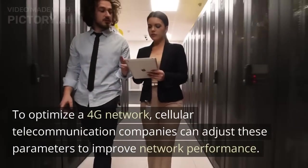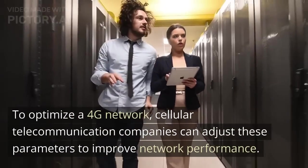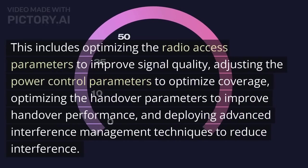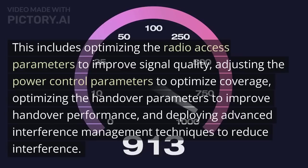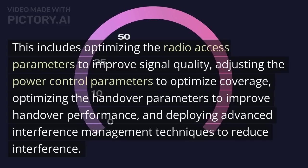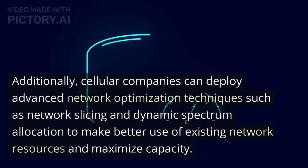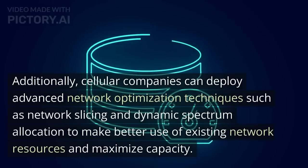To optimize a 4G network, cellular telecommunication companies can adjust these parameters to improve network performance. This includes optimizing the radio access parameters to improve signal quality, adjusting the power control parameters to optimize coverage, optimizing the handover parameters to improve handover performance, and deploying advanced interference management techniques to reduce interference. Additionally, cellular companies can deploy advanced network optimization techniques such as network slicing and dynamic spectrum allocation to make better use of existing network resources and maximize capacity.